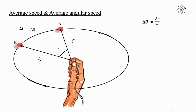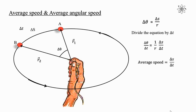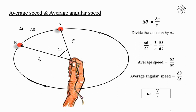Now let's find average speed and average angular speed using the equation delta theta equals arc length divided by radius. For that, divide the equation by delta T. We have delta theta divided by delta T equal to 1 divided by R into delta S divided by delta T. Average speed is equal to delta S divided by delta T, and average angular speed is equal to delta theta divided by delta T. Substituting these values, we have angular speed omega equal to linear speed V divided by R.